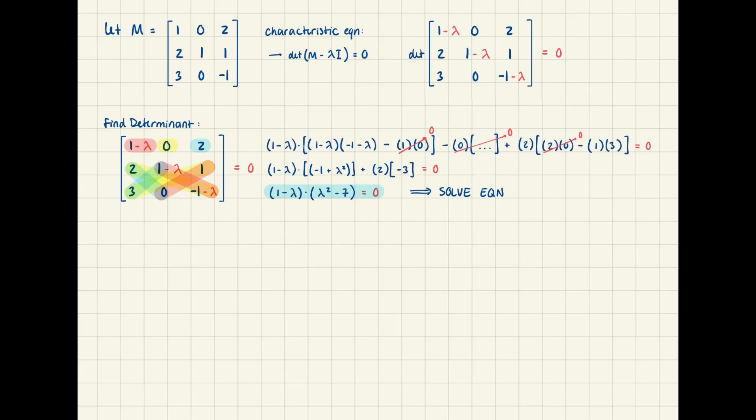Then, you would just solve that equation that I highlighted like you would any other polynomial. From this first expression, we get that lambda 1 equals 1, and for the second one, we get that lambda equals plus or minus 7, so we could let those be lambda 2 and 3. And those are our eigenvalues.